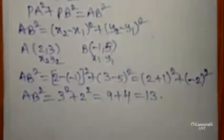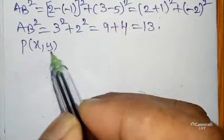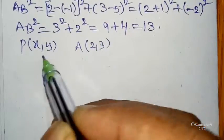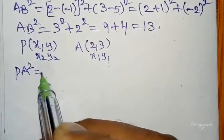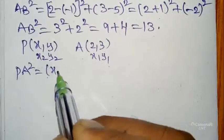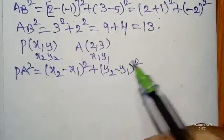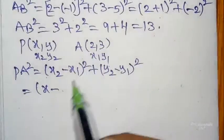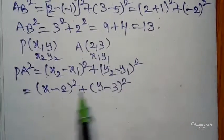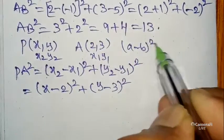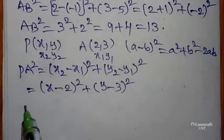Taking PA²: P is (x, y) and A is (2, 3). Using the distance formula: PA² = (x − 2)² + (y − 3)². This is in the form of (a − b)² = a² + b² − 2ab.